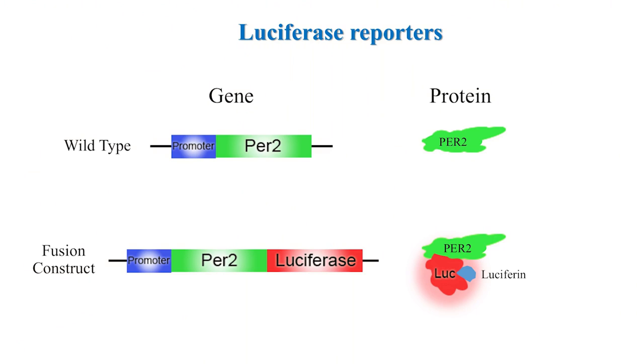In the mouse line we're using today, the PER2 DNA sequence in a genome is replaced by a sequence encoding PER2 fused to luciferase, creating a fusion protein. This way, light will be produced proportional to how much PER2 is present. This PER2 luciferase knock-in mouse line was first generated in a laboratory at Northwestern University and donated to our laboratory.